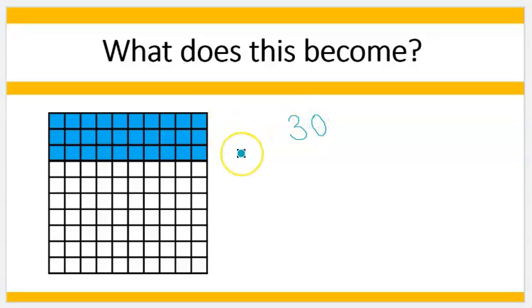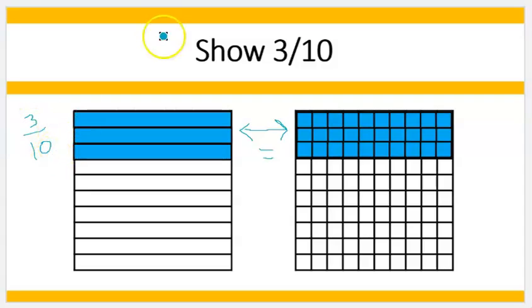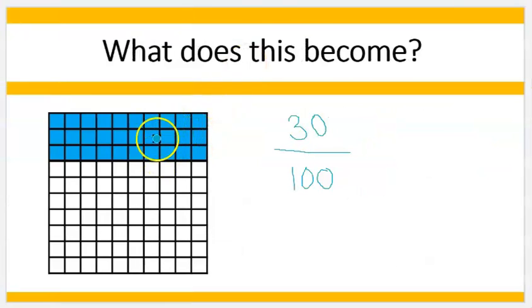But my whole is no longer made up of ten sections. It's made up of one-hundredth sections or one-hundredth parts. The bottom number becomes one-hundredths. So this right here becomes thirty over one-hundredth. Right here, it was three over ten. But when I move it to my one-hundredths, it becomes thirty one-hundredths.